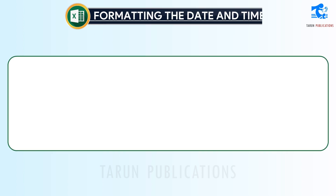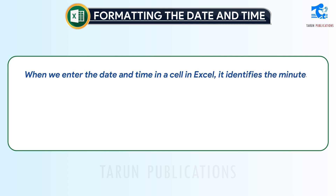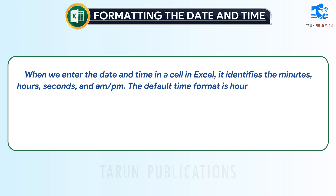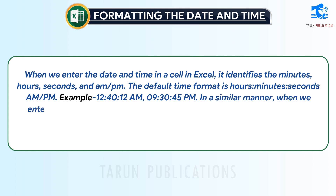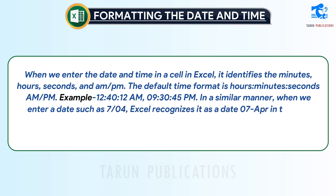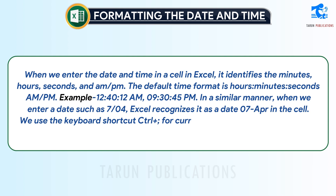Formatting the date and time. When we enter the date and time in a cell in Excel, it identifies the minutes, hours, seconds, and AM/PM. The default time format is hours:minutes:seconds AM/PM. For example: 12:40:12 AM, 09:30:45 PM. When we enter a date such as 7-04, Excel recognizes it as a date — 7th April — in the cell. We use the keyboard shortcut Ctrl+; for the current date and Ctrl+Shift+; to add the current time.